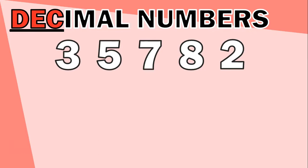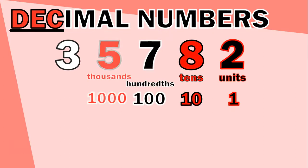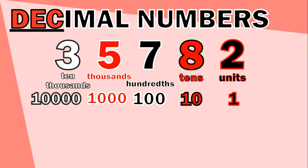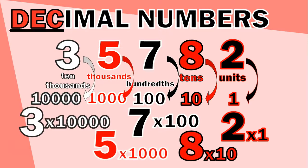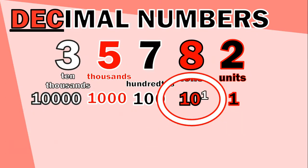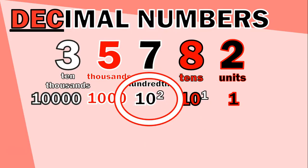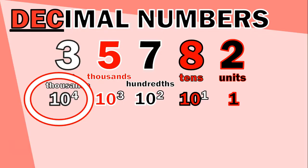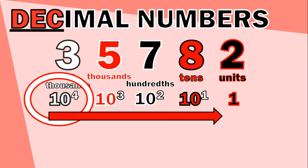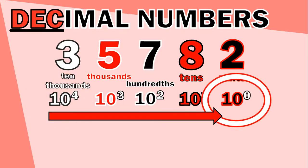Let's take the number 35,782. At primary school you may have been taught to divide this into units, tens, hundreds, etc. We have: 2 units, 8 tens, 7 hundreds, 5 thousands, and 3 ten-thousands. To reconstruct the number, we multiply each digit by its column value and add the results: 2×1, plus 8×10, plus 7×100, and so on. This is the base-10 system, and each column value can be written as 10 to the power of something — the tens column is 10¹, hundreds is 10², thousands is 10³. The units column is 10⁰, which equals 1, so it still works out.